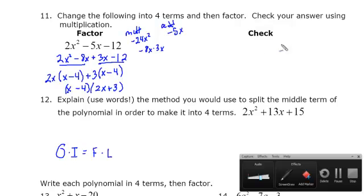Now to check it, we can multiply. So if we multiply X times 2X, we get 2X squared. If we multiply X times 3, we get plus 3X. And we get negative 8X minus 12.